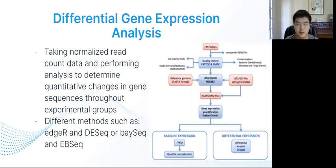Moving on to differential gene expression analysis. It is taking normalized read count data and performing analysis to determine quantitative changes in gene sequences throughout experimental groups. There are many tools which can achieve this goal. Four of them are edgeR, DESeq, baySeq, and EBSeq.